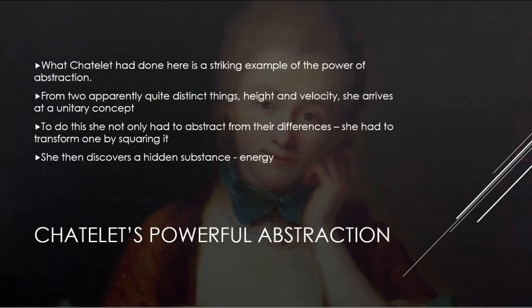What Duchatelet did was a striking example of the power of abstraction. From two apparently quite different things — height and velocity — she arrives at a unitary concept. She considered not just cannonballs but planetary dynamics as well. To do this she had not only to abstract from the difference between height and velocity, but to transform one of them — velocity — by squaring it. By doing this she discovers a hitherto unknown substance: energy, discovered by the power of abstraction.